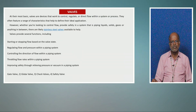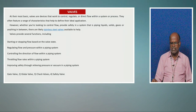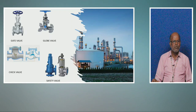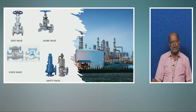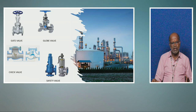Some of the different types of valves used in industries are gate valve, globe valve, check valve, and safety valve. You can see the appearance of the gate valve, globe valve, check valve, and safety valve. Each valve has its own function and is used in different piping systems based on the requirement.